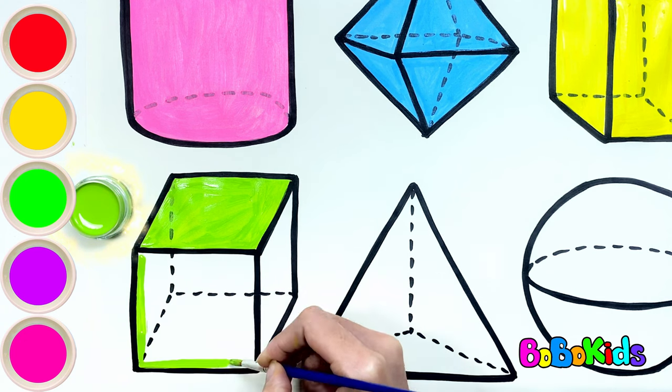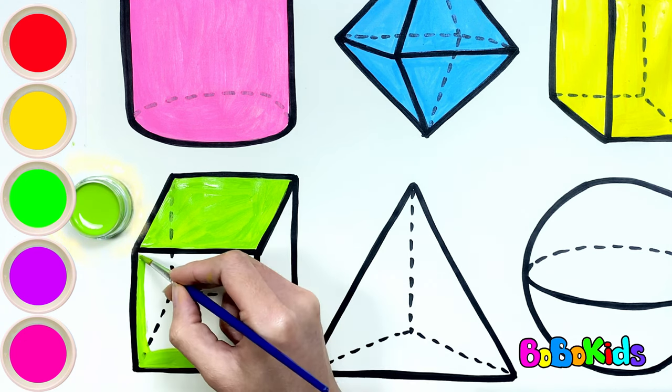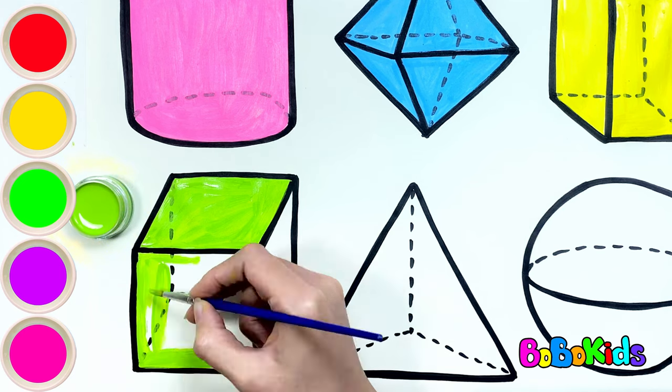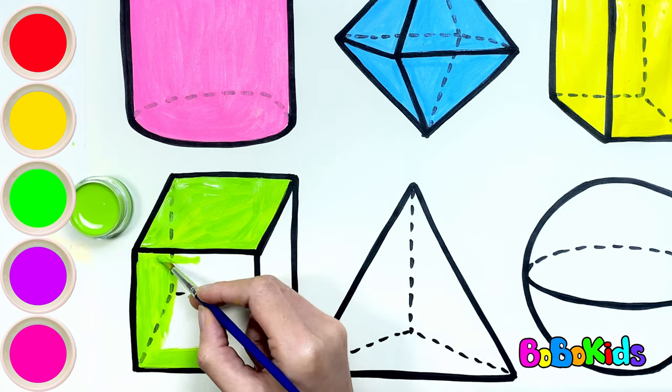The 3D square looks like the Rubik's cube toy that kids often play with at home, right? Rubik's cubes come in many colors and are made from many 3D squares put together.